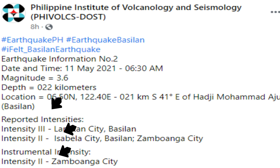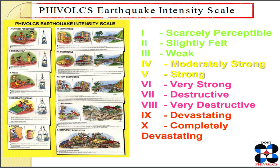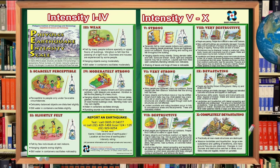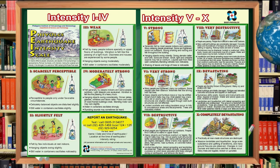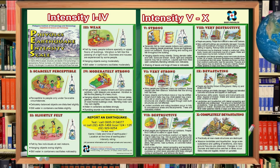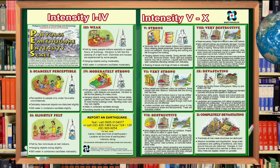In the Philippines, the intensity of an earthquake is determined using the PHIVOLCS Earthquake Intensity Scale, or PEIS. Intensity 1: scarcely perceptible. Intensity 2: slightly felt. Intensity 3: weak. Intensity 4: moderately strong. Intensity 5: strong. Intensity 6: very strong. Intensity 7: destructive. Intensity 8: very destructive. Intensity 9: devastating. Intensity 10: completely devastating.